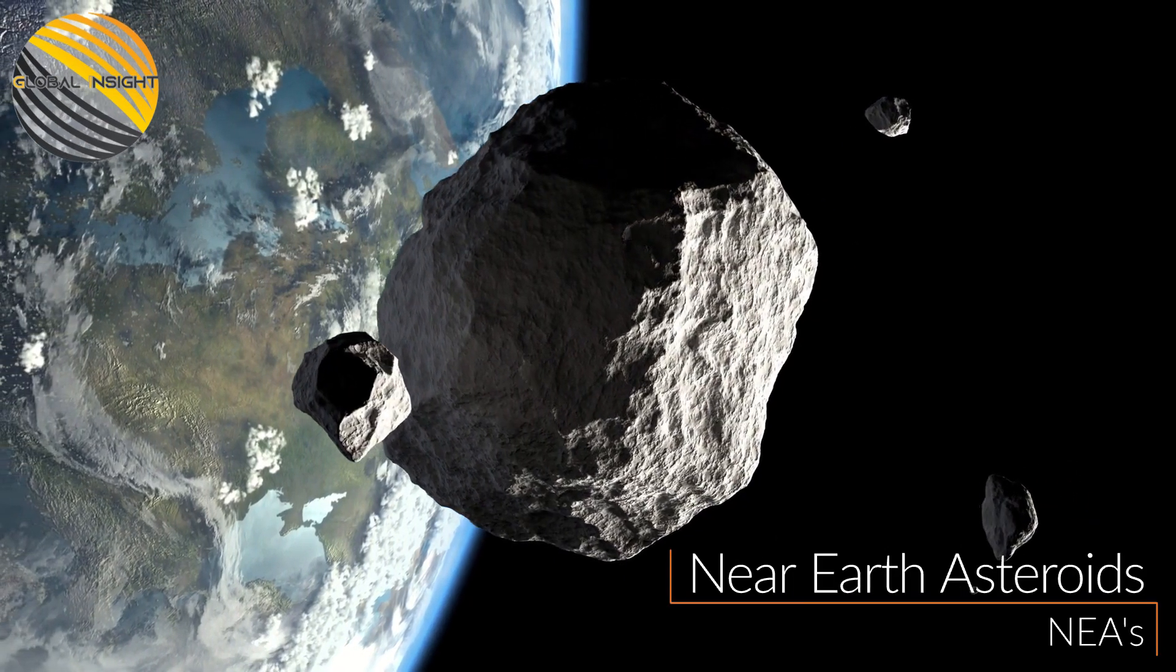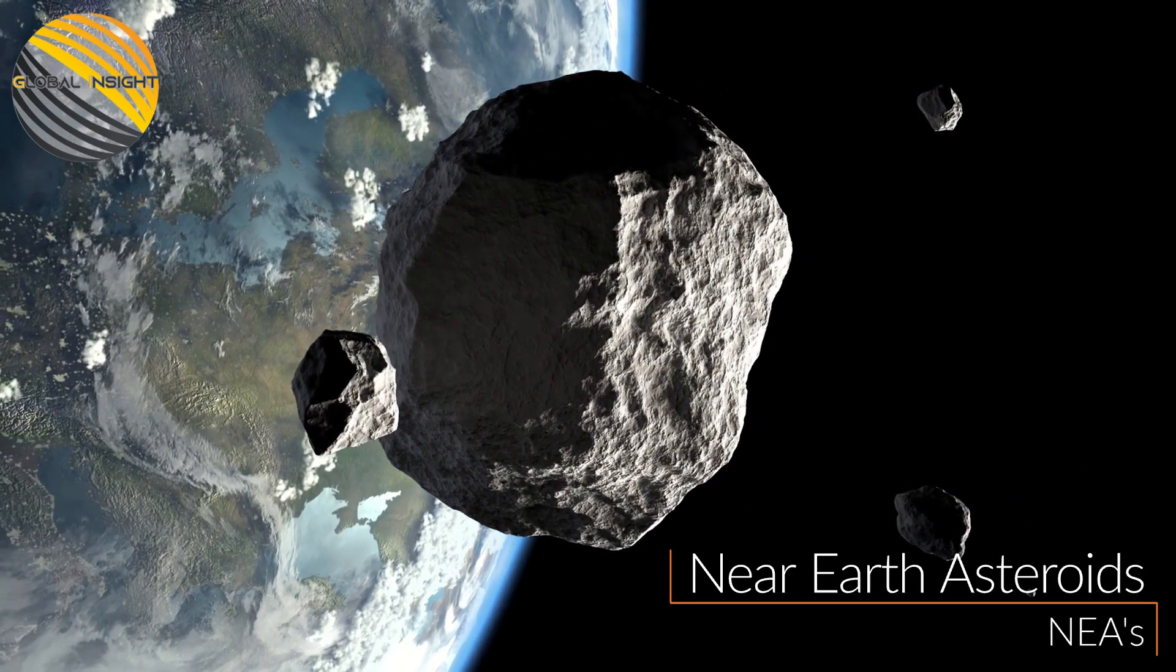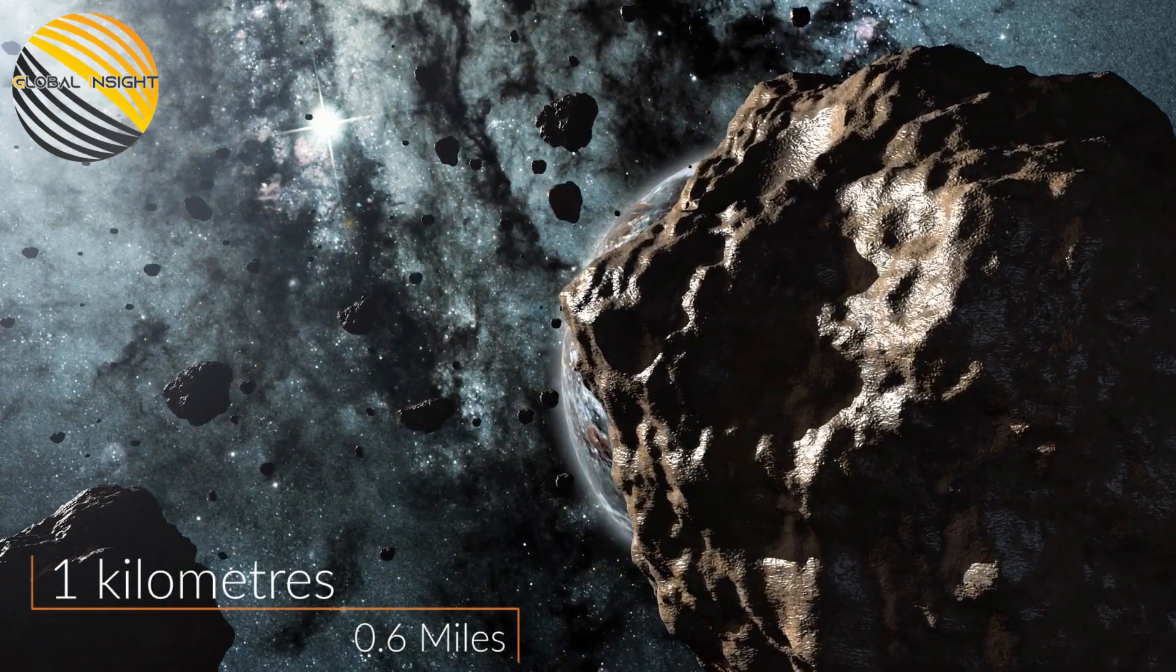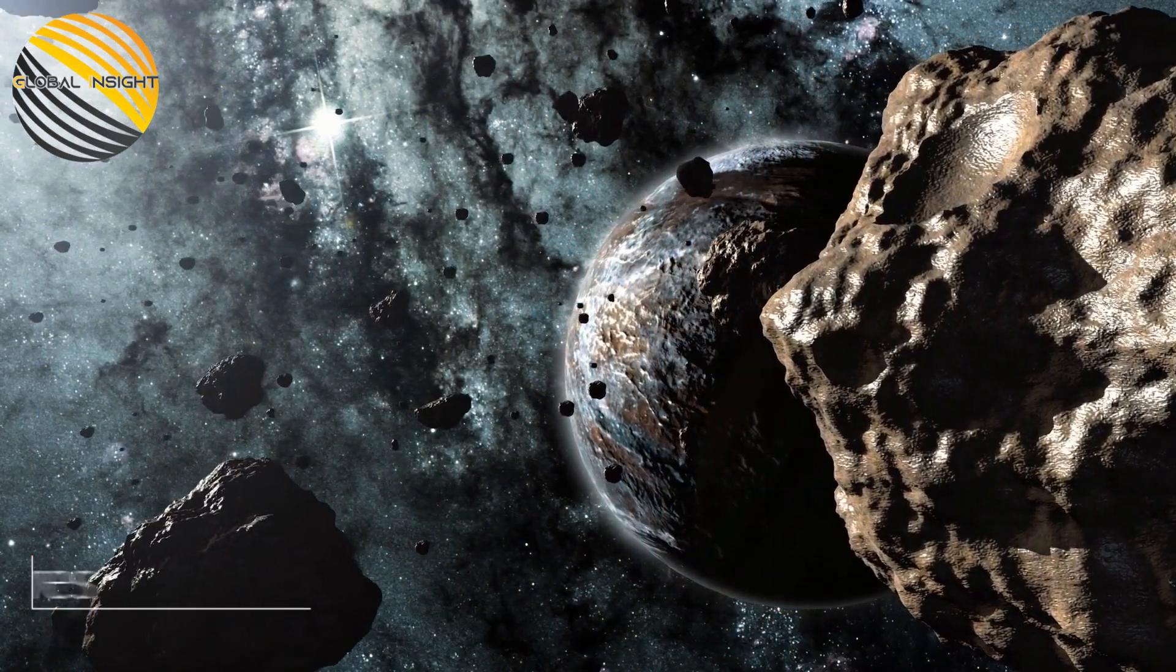So far we have found two large near-Earth asteroids, NEAs, that are about 1 kilometer, 0.6 miles, across, a size that we call Planet Killers.